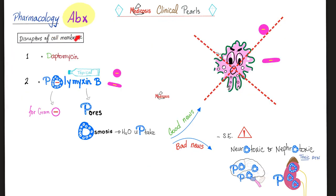Clinical pearl number two — antibiotic review: daptomycin and polymyxin are not cell wall synthesis inhibitors; they are cell membrane disruptors. Polymyxin pokes pores and holes into the bacterial cell membrane. The cell membrane protects bacteria against osmotic damage — pierce it and the bacteria dies by osmosis. The downside: daptomycin and polymyxin can also perforate your own cell membrane, causing neurotoxicity or nephrotoxicity. That's why polymyxin is no longer used systemically — only topically today.